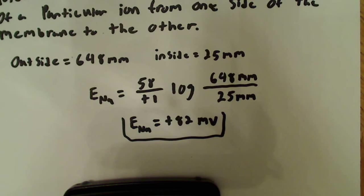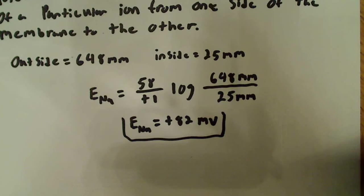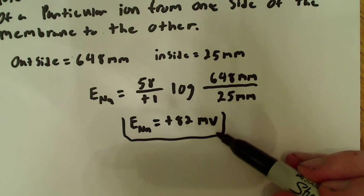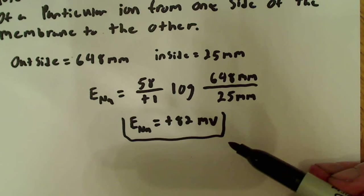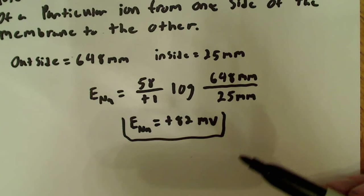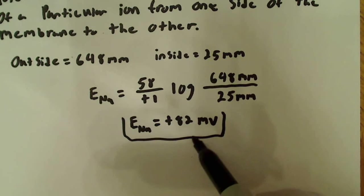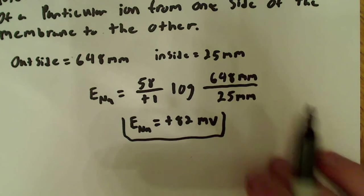So, the first part of the question asks for just the equilibrium potential for sodium. So, at this point, at this membrane potential, 82 millivolts, that's when there's going to be no net movement of Na plus or sodium across the semipermeable membrane at that point. So, when the membrane potential equals plus 82, no net movement of sodium.